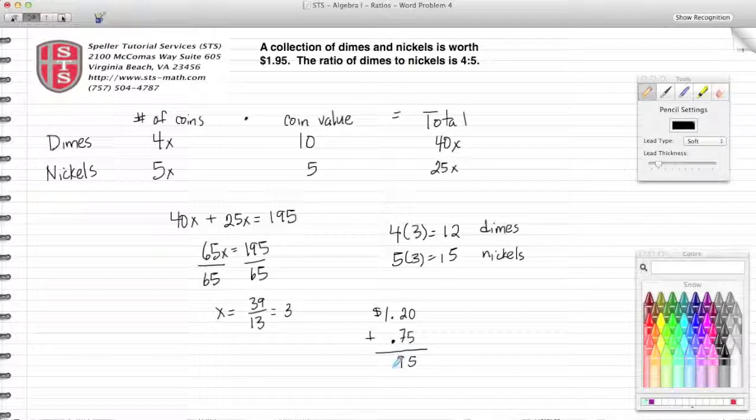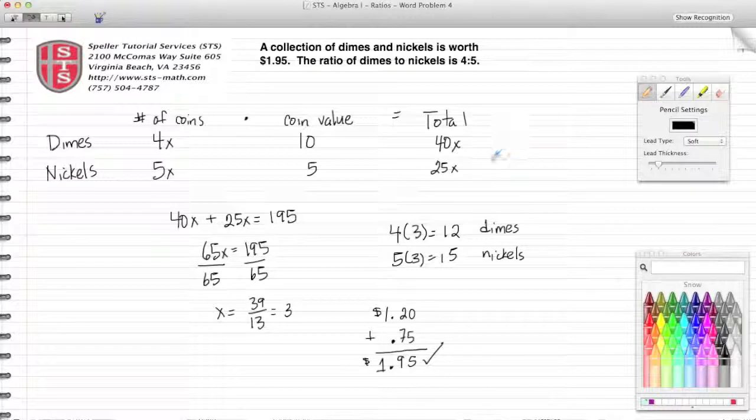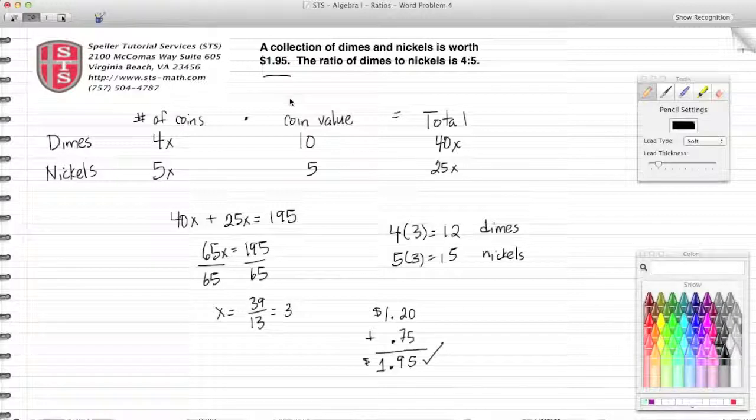When I add these two up, 0 plus 5 is 5, 7 plus 2 is 9, be sure to bring down your decimal point, and 1 plus 0 is 1. So I see that 12 dimes and 15 nickels does have a value of 1 dollar and 95 cents, just as it was given in the word problem stated above.